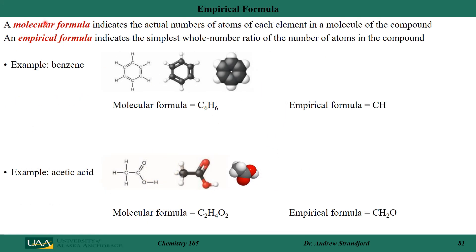When we look at molecular formulas, we need to indicate the actual number of atoms for each element in a molecule or compound. For example, the molecular formula for benzene shows six carbons and six hydrogens — that's how the molecule actually exists. There is also something called an empirical formula, which lists the elements in the lowest common denominator. Taking C₆H₆ and dividing by six gives us CH — the empirical formula.